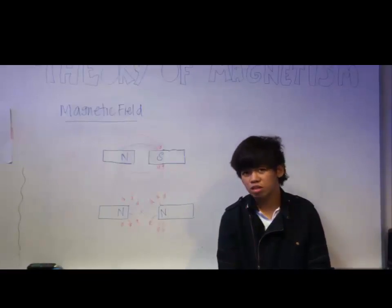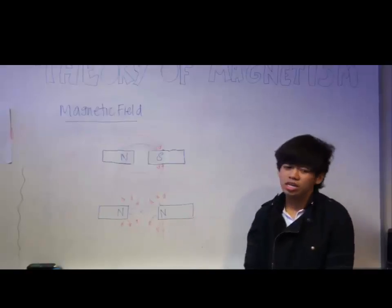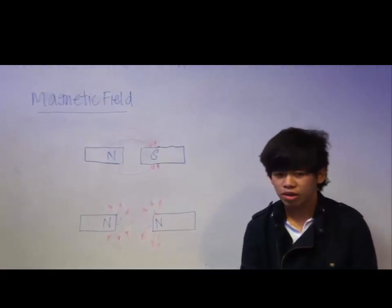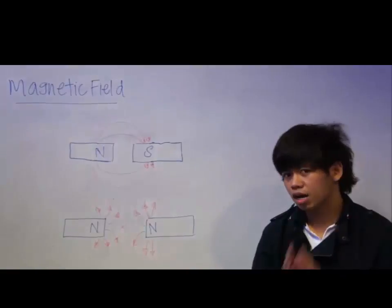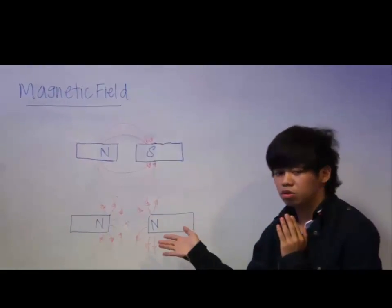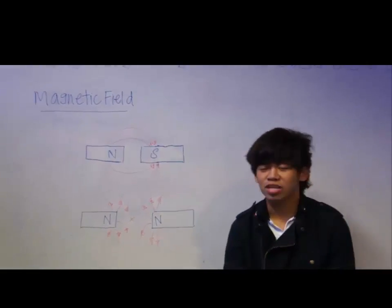For the next one, for magnets of similar poles as shown here, there will be a neutral point present. Therefore, when you place a compass at the neutral point, the compass will not point in any direction.